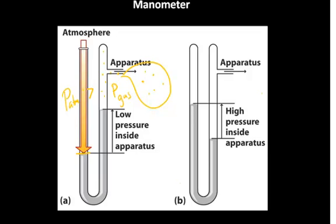You can actually determine the pressure of the gas based on the difference between the barometric pressure measured in millimeters of mercury and the height difference measured in the same unit.